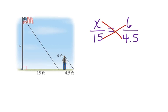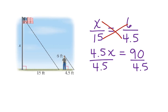Now we can cross multiply and solve. 4.5x equals 90. We divide both sides by 4.5, and x is equal to 20 feet. The height of the flagpole is 20 feet. Again, we use proportions to solve this problem.